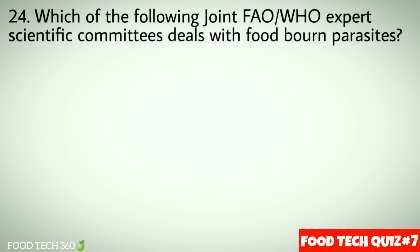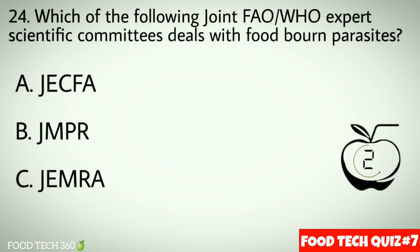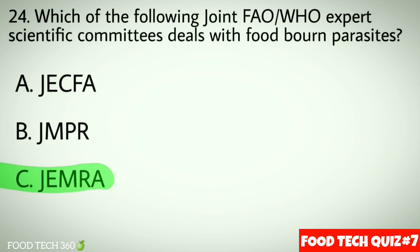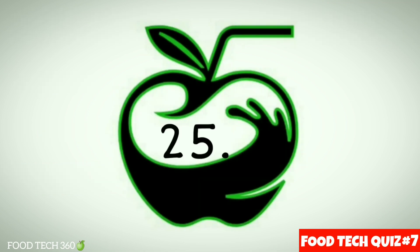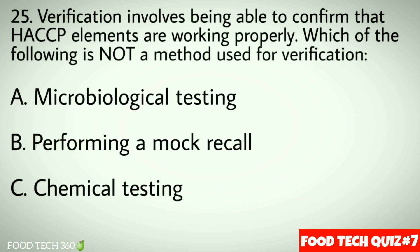Question number 24: Which of the following joint FAO/WHO expert scientific committees deals with foodborne parasites? Options: a) JECFA, b) JMPR, c) JEMRA. Correct answer: c) JEMRA. Question number 25: Verification involves being able to confirm that HACCP elements are working properly. Which of the following is not a method used for verification? Options: a) Microbiological testing, b) Performing a mock recall, c) Chemical testing.